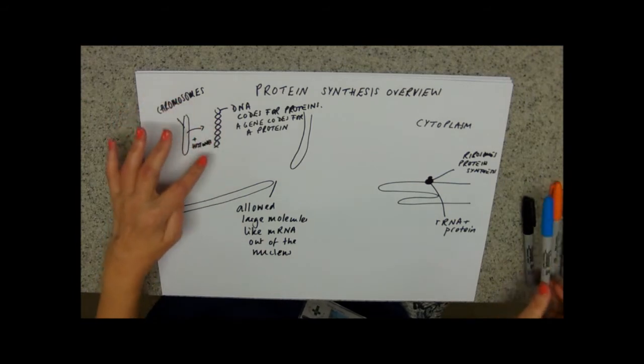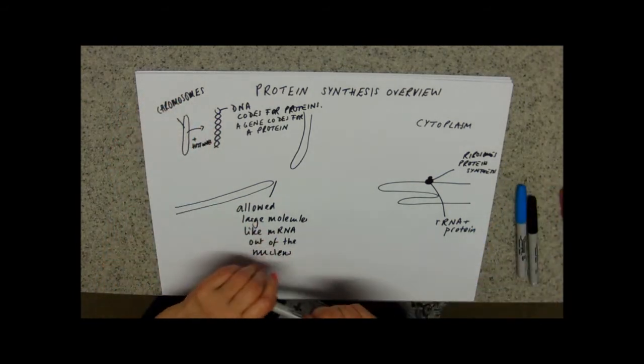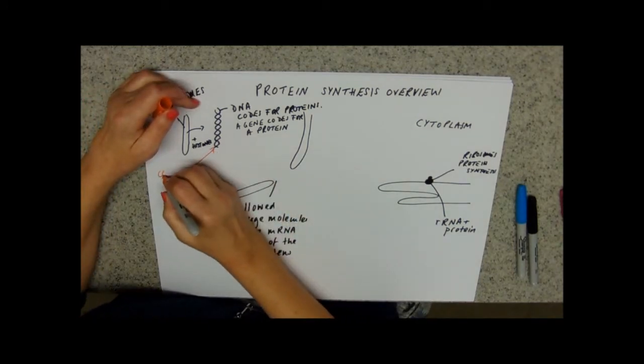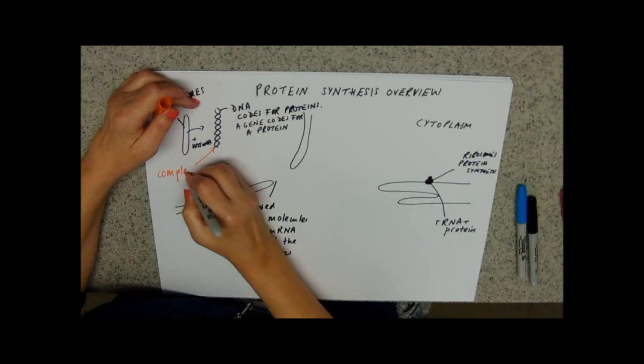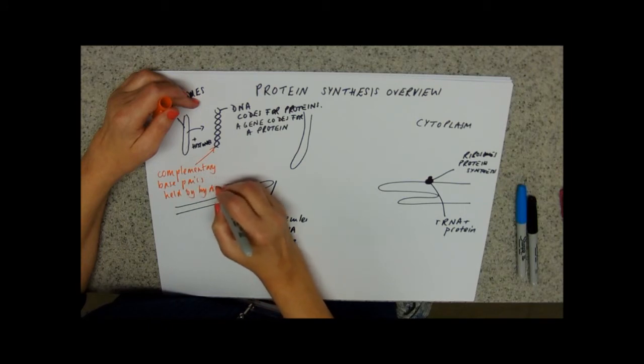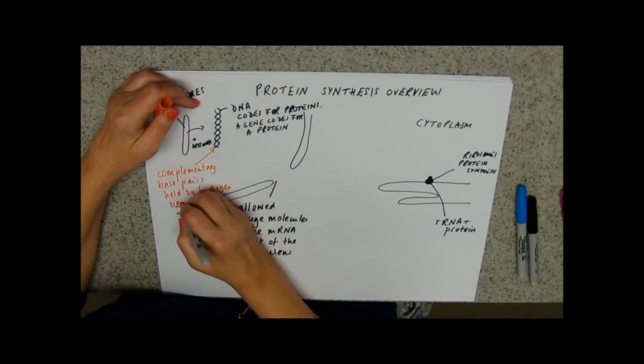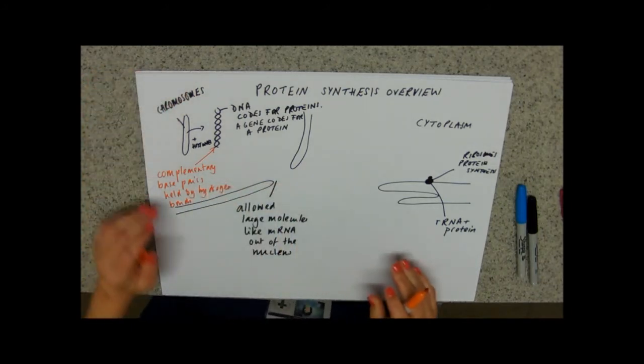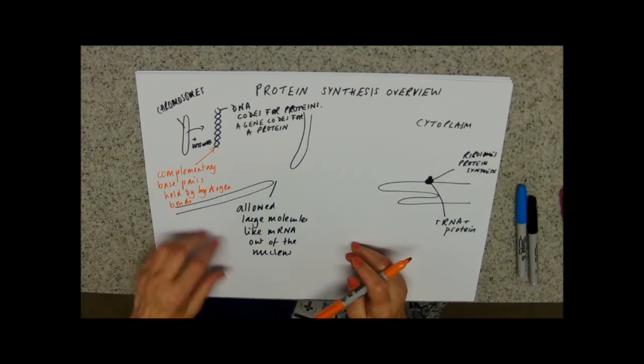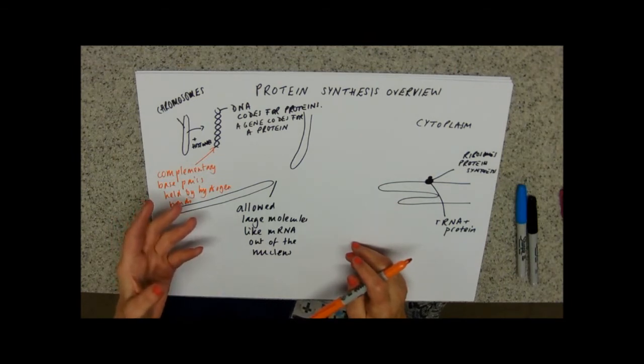So DNA - what do we know? It's double-stranded and we know that these strands are complementary, and complementary base pairs are held by hydrogen bonds.